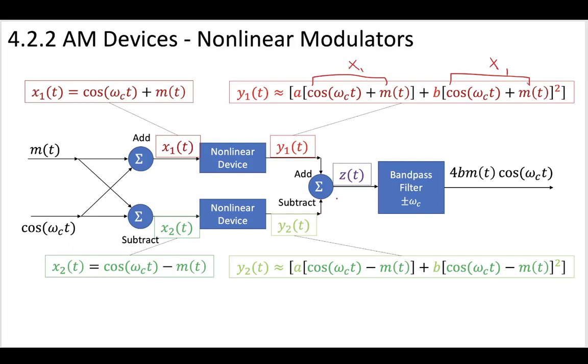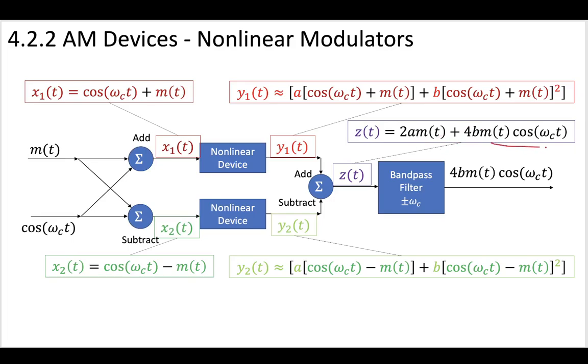And via this operation we arrived at some signal z. That signal z now is a combination of y1 and y2. We were really happy about this because we saw that by putting it through that next summer, we had a term here that looks exactly like what we wanted.